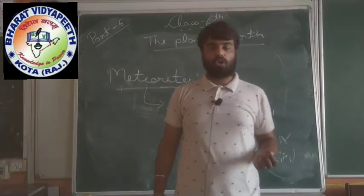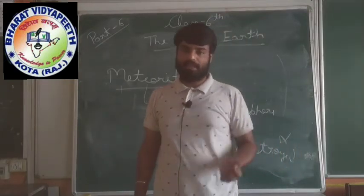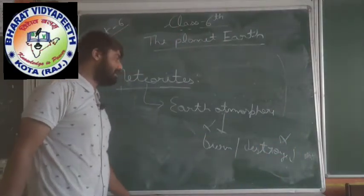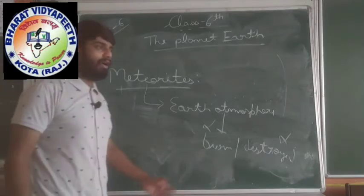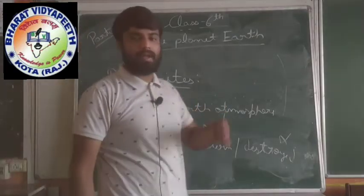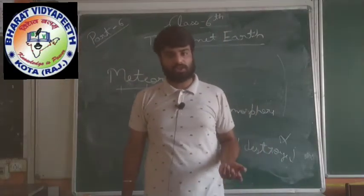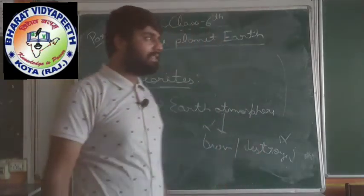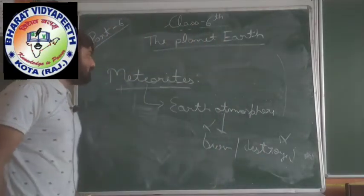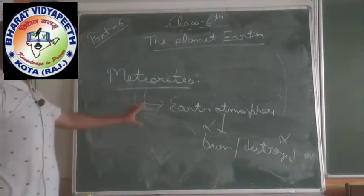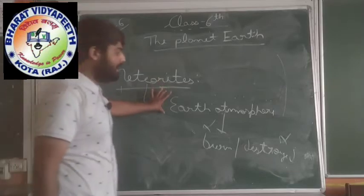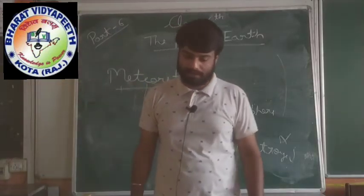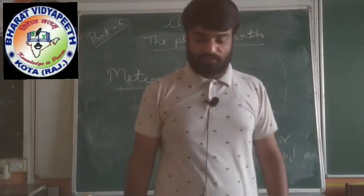Meteors are the small rocky materials which burn when they enter the Earth's atmosphere. When they enter the Earth's atmosphere, they burn, are destroyed, and end. But meteorites are different — they are the larger bodies that the Earth's atmosphere does not destroy.